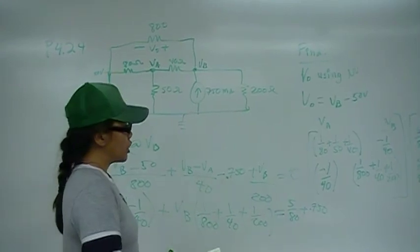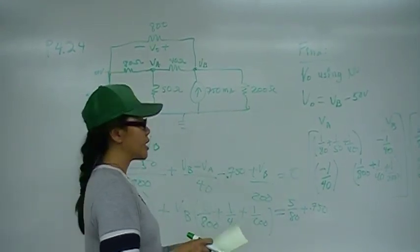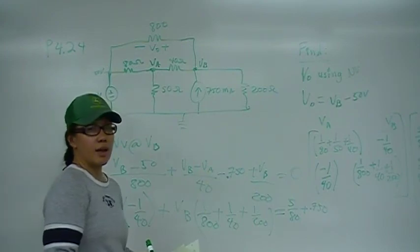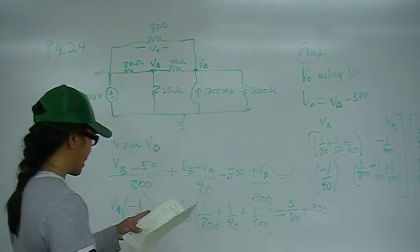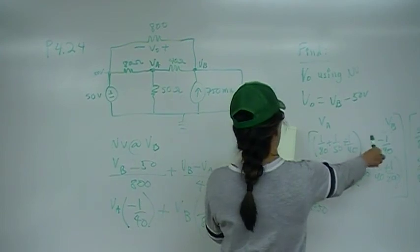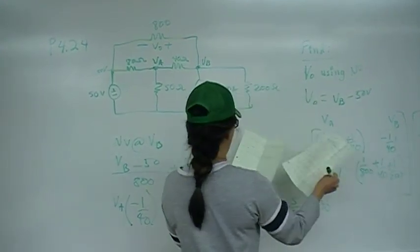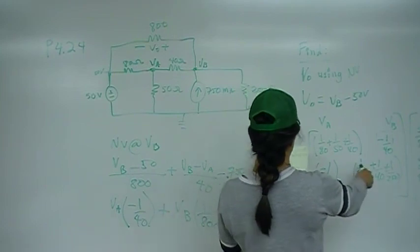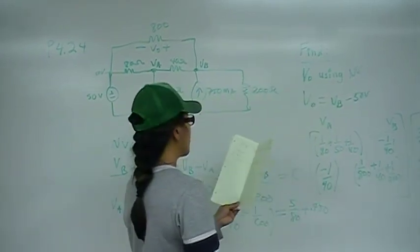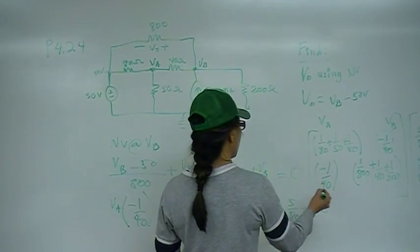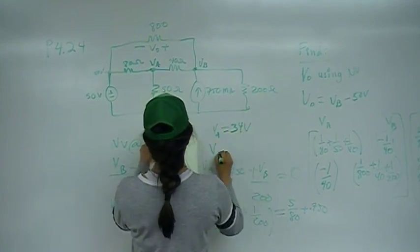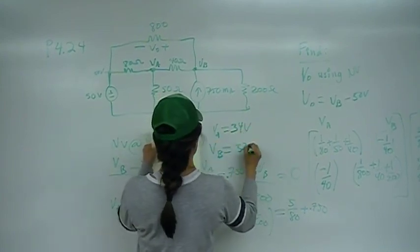You should know how to use the matrix application on your calculator — you probably have a TI-89 engineering calculator. If you go to apps, there is a matrix application. Let me just verify that I have my things right, because I already did this on my TI-89. For the first equation: 1/80, 1/50, 1/40, negative 1/40, and 5/8. For the second equation: negative 1/40, 1/800, 1/40, 1/200, and 5/80 plus 0.750. When you do that, you will find that VA is equal to 34 volts and VB is equal to 53.2 volts.